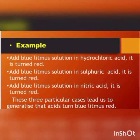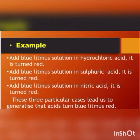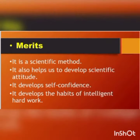For example, when blue litmus solution is added to hydrochloric acid, it turns red. When blue litmus solution is added to sulfuric acid, it turns red. When blue litmus solution is added to nitric acid, it also turns red. These three particular cases lead us to generalize that acids turn blue litmus red.